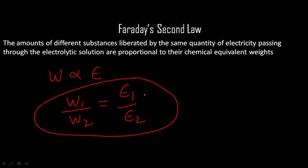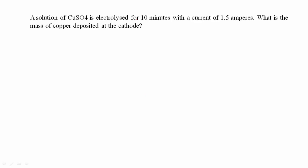Now let's try to solve this problem which is saying that CuSO4 is electrolyzed for 10 minutes, that means time is 600 seconds, and current is 1.5 ampere. What would be the charge? Charge is IT, that is 600 seconds into 1.5 ampere, which is 900 coulombs.